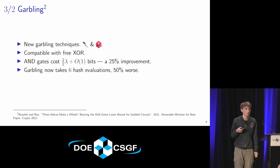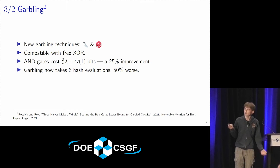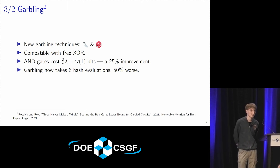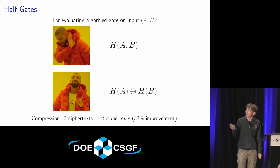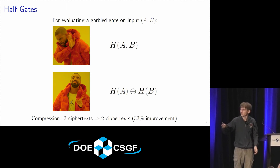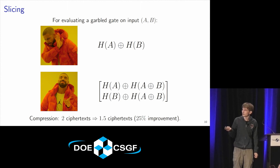Last year I discussed three-halves garbling, also called sliced-and-diced garbling — an optimization for the garbled circuit step that achieved a 25% improvement in communication complexity. The downside is it's 50% worse in computation, but since the system is heavily communication-bottlenecked, that's not a problem. The idea: the previous state of the art changed how you hash inputs to get a lookup table, making hash evaluations redundant in a way that allows compression. We found a new way of compressing further by slicing into two halves and operating on them separately, giving this 25% speedup.